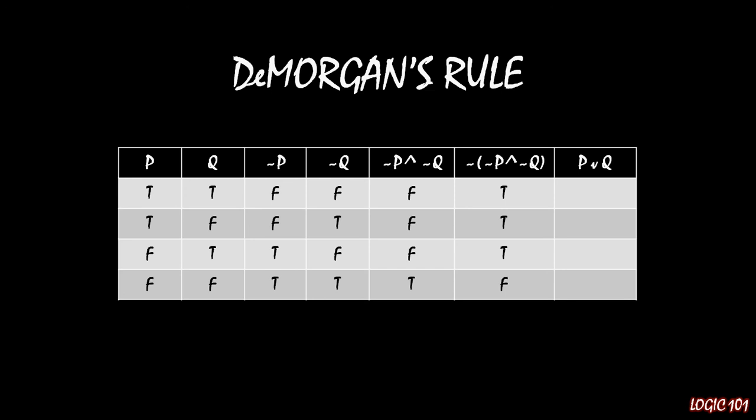We can compare that to p or q. Remember that p or q is true as long as one of the component parts is true. Looking back at columns one and two, in rows one, two, and three at least one of those expressions is true, and in the fourth row they are both false. So p or q is true in the first three rows and false in the fourth row. Comparing the last two columns, they have identical truth values — regardless of the truth values of p and q, p or q and not (not p and not q) are completely identical.